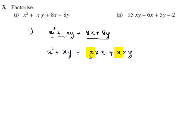We find that x is common in the first two terms. So using the distributive law we bring out x and we are left with x in the first term and y in the second term.